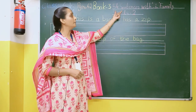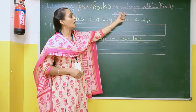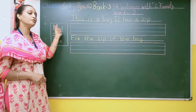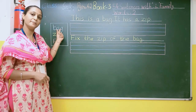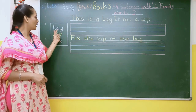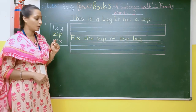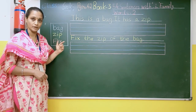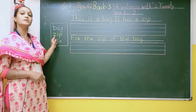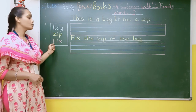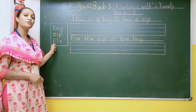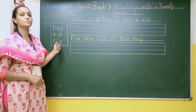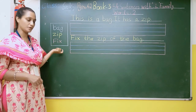In this we will complete sentences with i-Family words 2. Here there is an image of a bag. B-A-G, bag. What is zip? Z-I-P, zip. What is fix? F-I-X, fix.